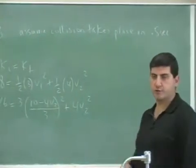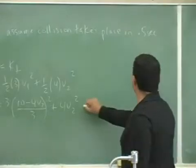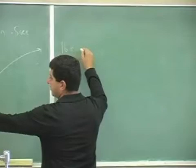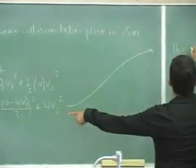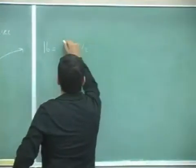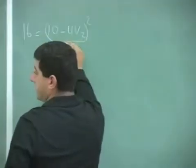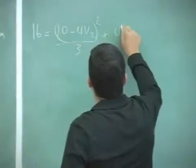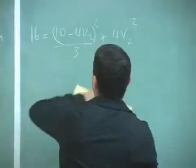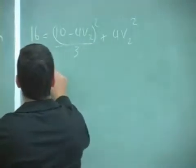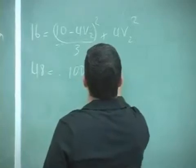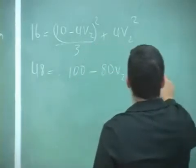You substitute, you get rid of the v1, and then you bring it over. You get 16 equals 10 minus 4v2 squared divided by 3. Then multiply everything by 3, you're going to get 48 equals... then expand this out: 100 minus 80v2 plus 16v2 squared.